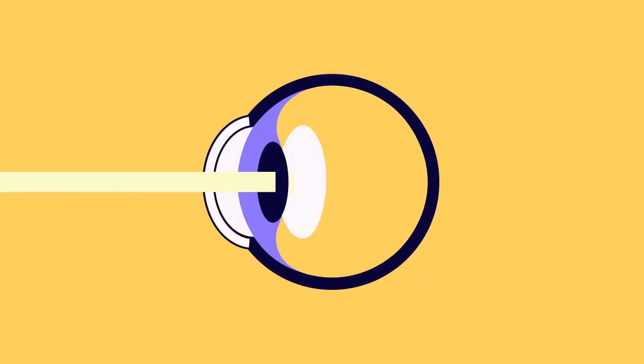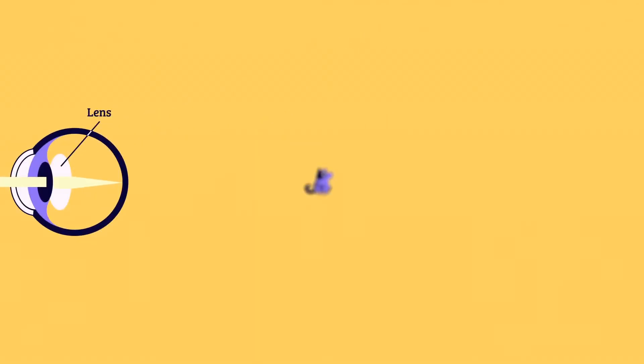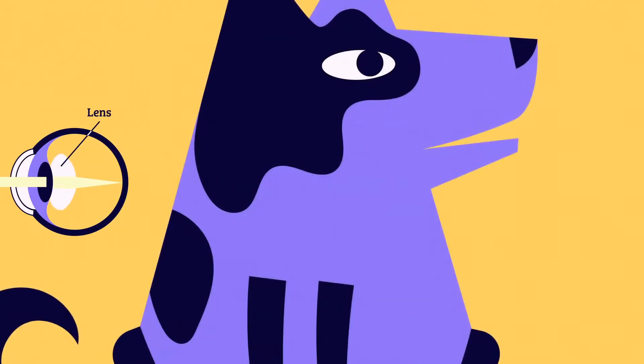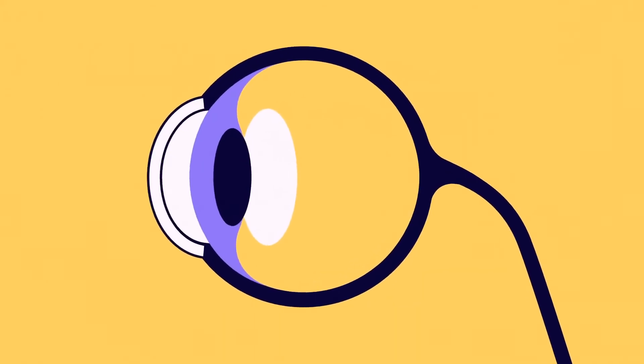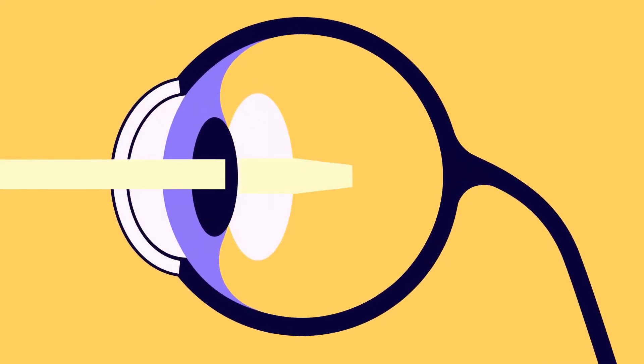Behind the iris is the lens of the eye. It helps focus the light coming into your eye so you can see things clearly. The lens flattens so you can see things that are far away and bends so you can see things up close. When the lens, cornea, and pupil are all working together properly, they will focus light on the back of the eye.